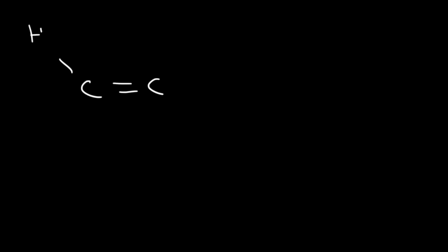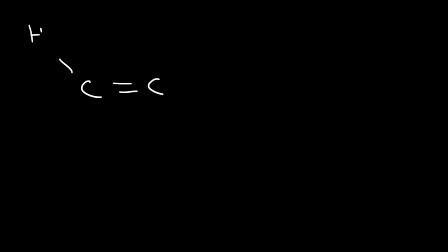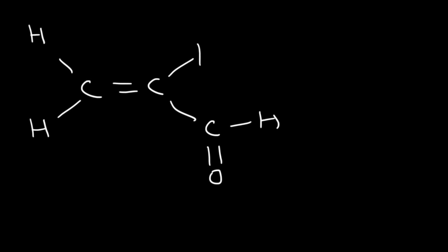Let's say you have a structure and need to count sigma and pi bonds. Every bond contains one sigma, so counting all bonds gives you the number of sigma bonds — in this example, seven sigma bonds. Every double bond has one pi bond, so counting the double bonds gives the number of pi bonds — in this case, two pi bonds. That's a simple and easy way to count sigma and pi bonds.